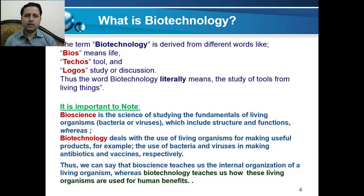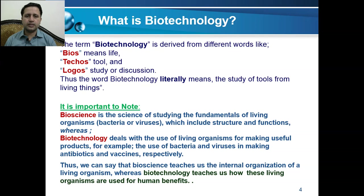When we use microorganisms or their products at commercial scale and apply scale-up techniques to produce those compounds at massive scale, this is called biotechnology. Biotechnology is also called the 'clever science of biology' because it uses biochemistry techniques, molecular biology techniques, and engineering techniques to solve problems and scale up technology. Thus, bioscience teaches us the internal organization of living organisms, whereas biotechnology teaches us how these living organisms are used for the benefit of human beings.